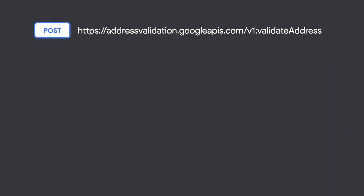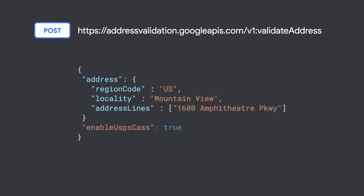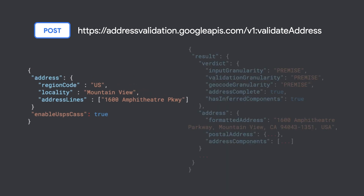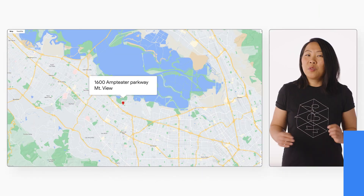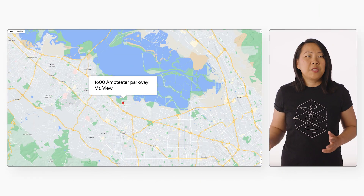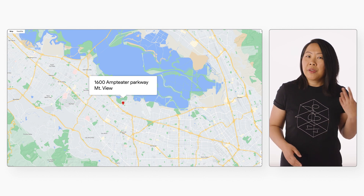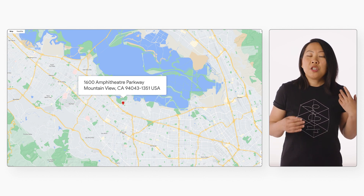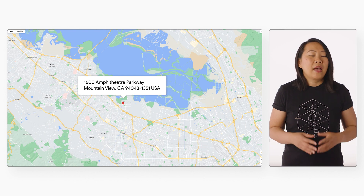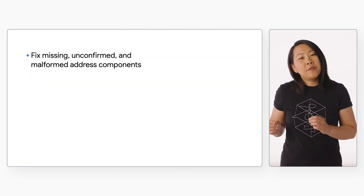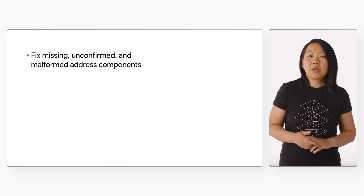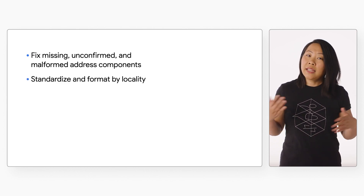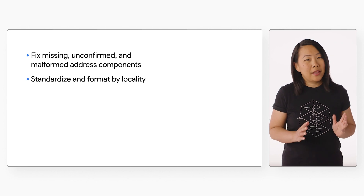With the Address Validation API, all you have to do is send an address object as a POST request to the V1 Validate Address endpoint of addressvalidation.googleapis.com. Google Maps Platform will use Google's knowledge of the real world to determine whether the various address components match known real world entities in our database. As part of this process, the Address Validation API will also attempt to fix missing or unconfirmed components of the address, then cleanse and standardize it to the appropriate format for the locality.